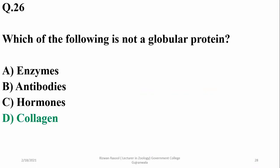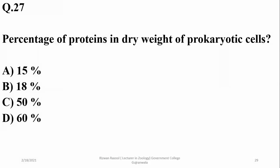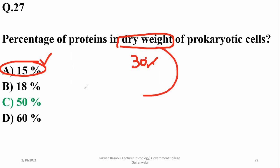Percentage of proteins in dry weight of prokaryotic cells is 50%. In total weight of prokaryotes, it's 15%, and if you talk about dry weight, dry weight, if you take just the dry weight, the percentage of proteins in dry weight is 50%, so right option is C.